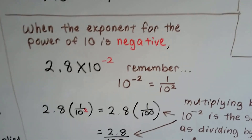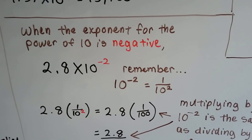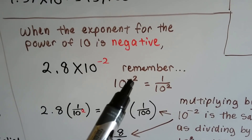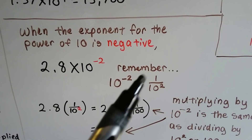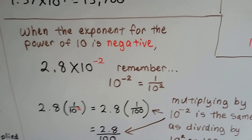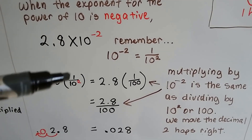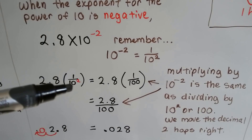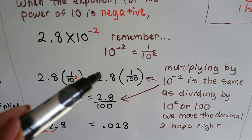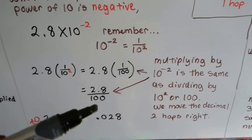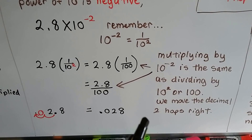When the exponent for the power of 10 is negative — like 2.8 times 10 to the negative second power — just remember that a negative power means a fraction. Whenever we see a negative exponent, we think fractions. So it would be 1 over 10 to the second power as a positive, and 2.8 would be multiplied by 1 over 10 to the second power. 10 to the second power is the same as 100, so it would be 1 over 100, and we could write it as 2.8 over 100 because multiplying by 10 to the negative second is the same as dividing by 100.